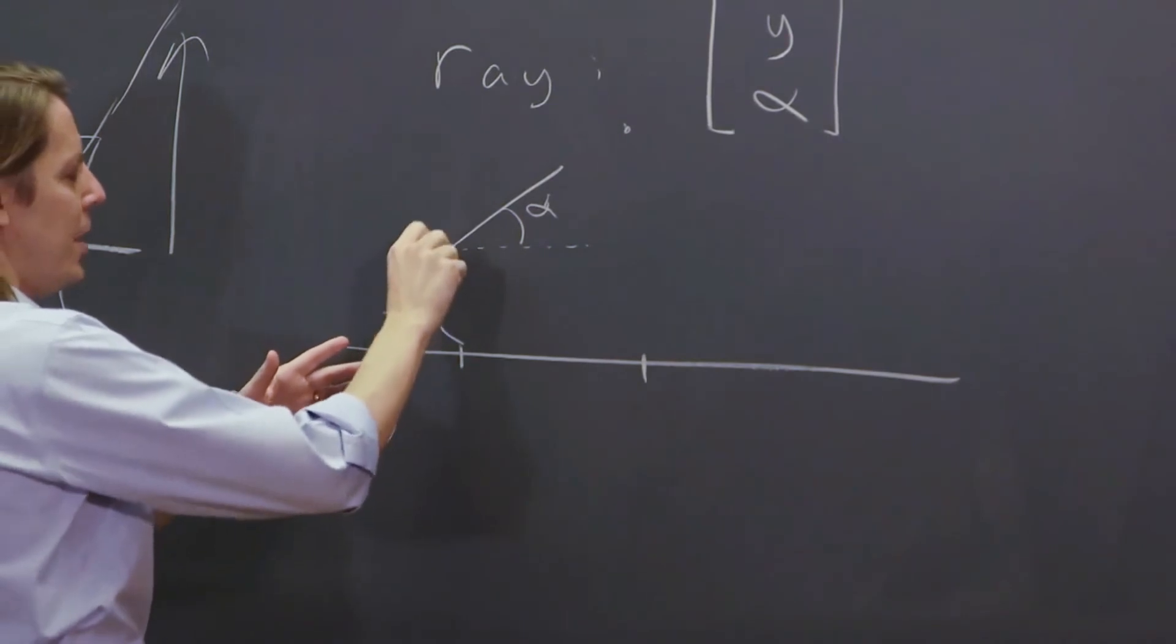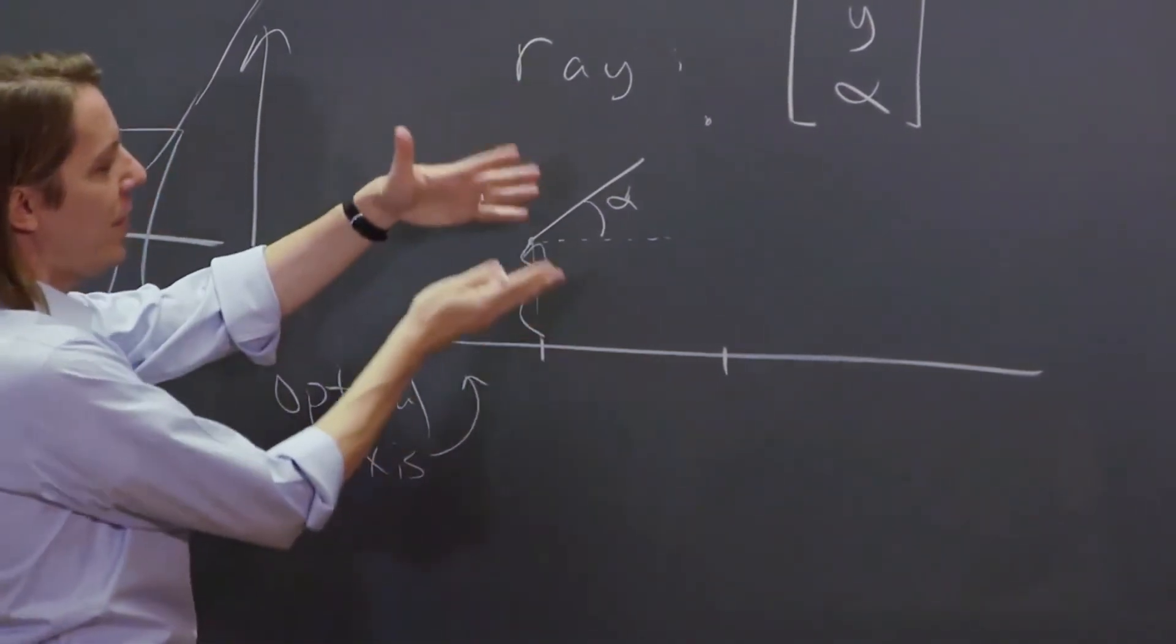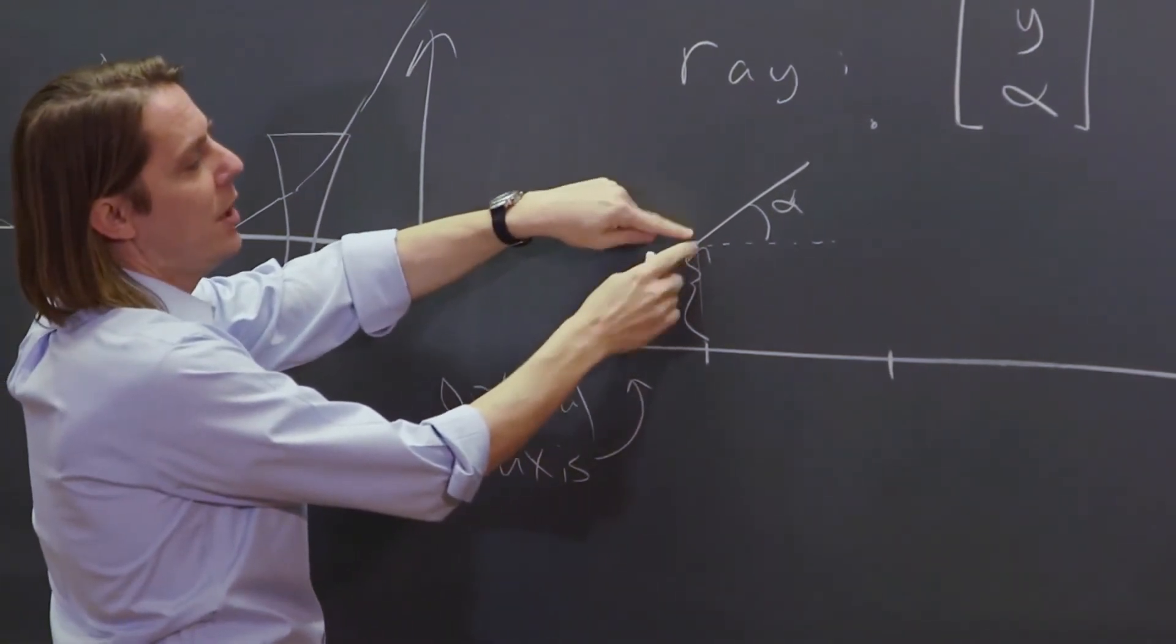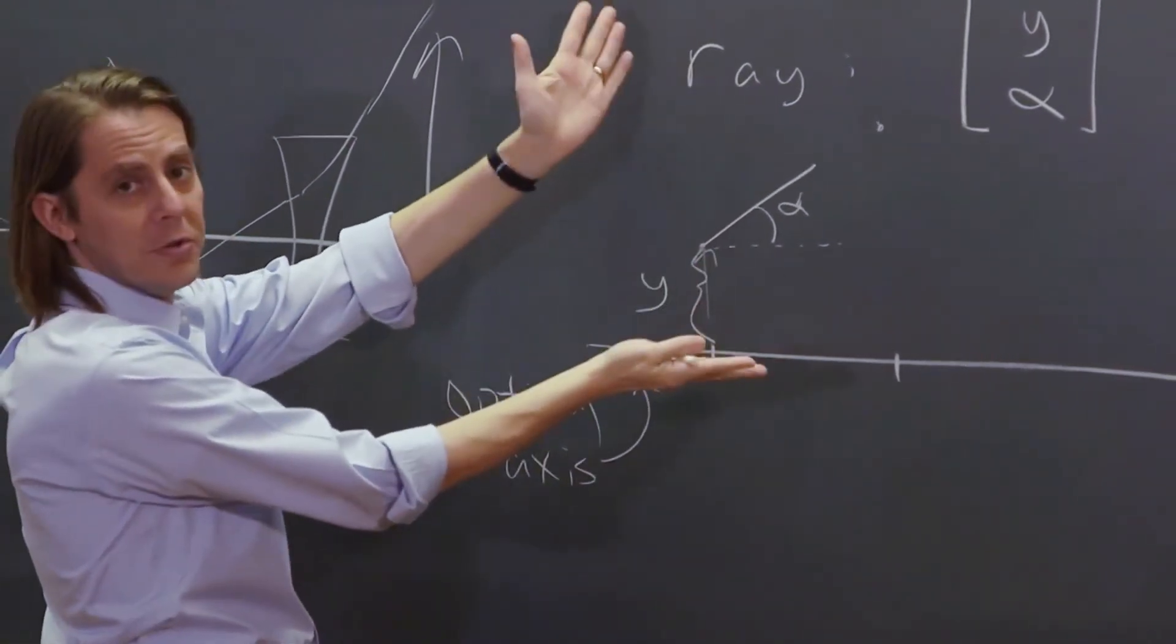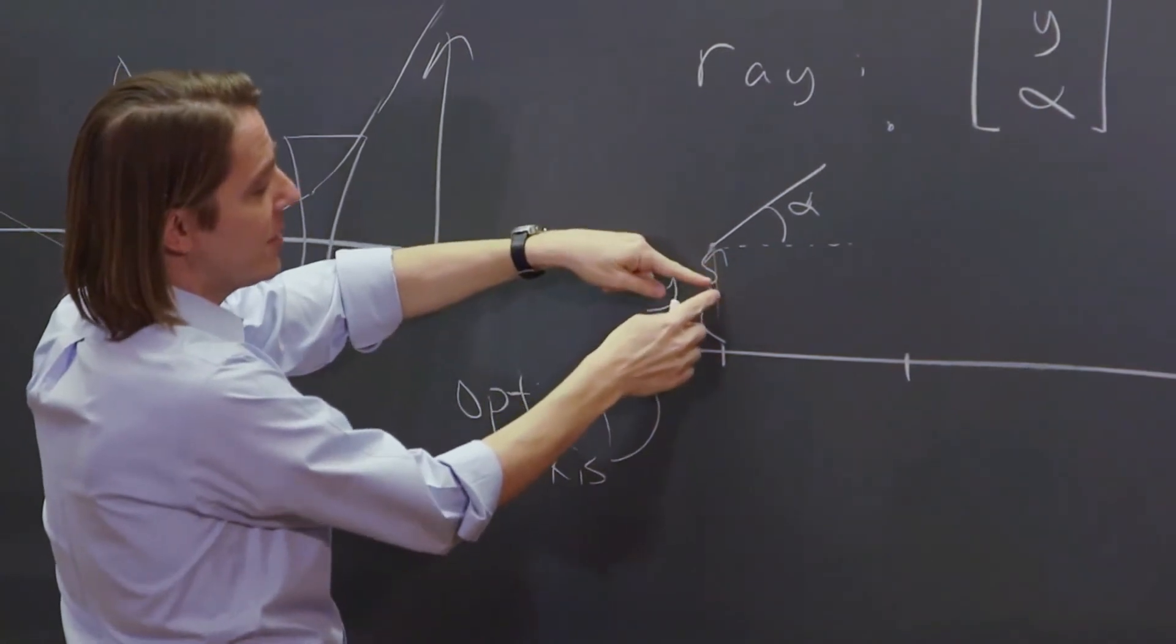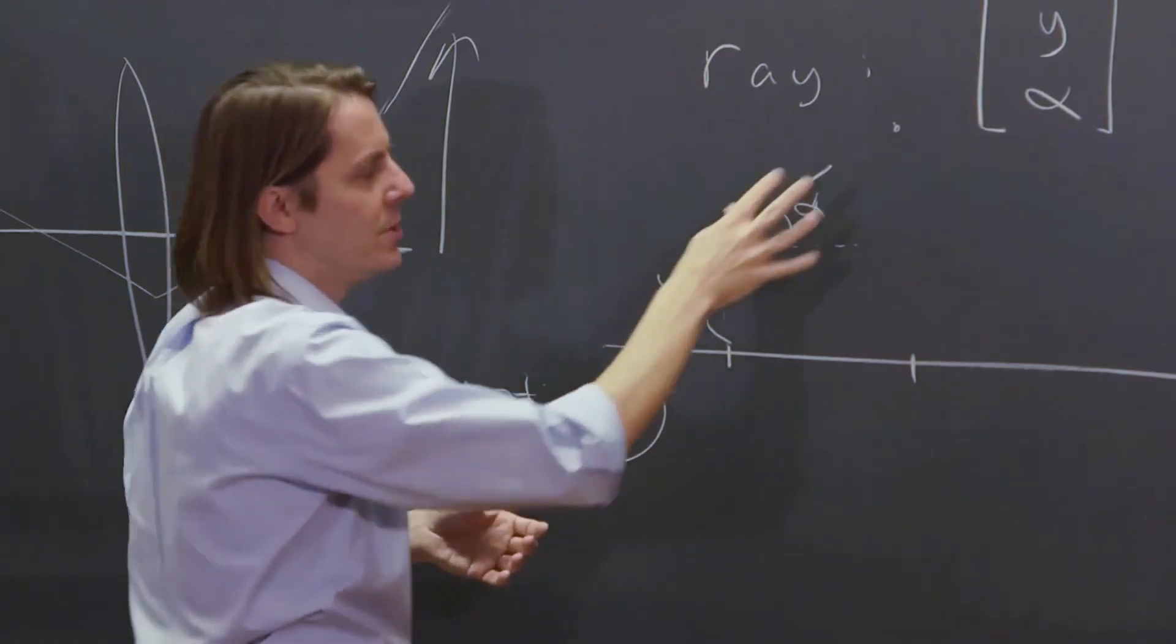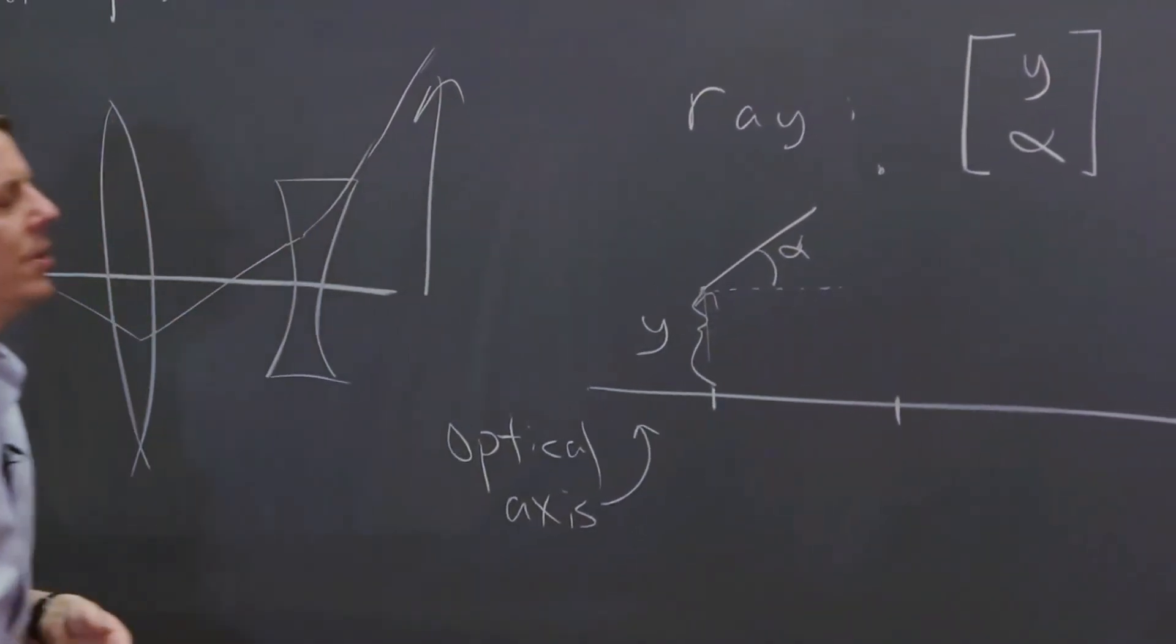Not just this one, but if you had an object, say if this were an object here, it would be sending light in all directions. The light from this point of the object would all be at the same Y. It would just send light out at all different alphas. But it would also have light coming all the way off the object at different Ys and different alphas. So an object would give you all these rays, but you can keep up with them with this simple vector.